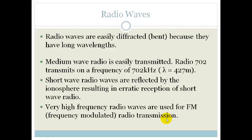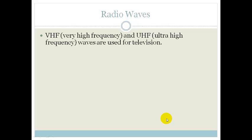Very high frequency (VHF) radio waves are used for FM or frequency-modulated radio transmission — that's what we listen to on stations like KFM or 5FM. Very high frequency and ultra-high frequency (VHF and UHF) waves are used for television. If you've ever seen a TV search for its own channels, it goes through all the VHF channels and then all the UHF channels, because different TV stations broadcast on different frequencies.